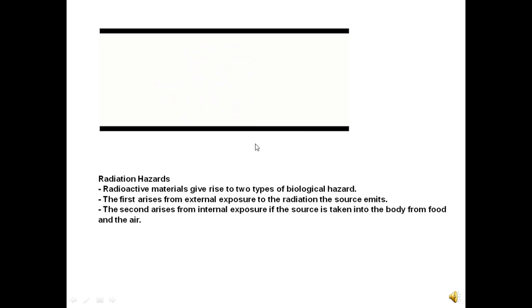Inside the body alpha is tremendously dangerous, beta less so, gamma less so than beta. We have to remember we are comparing sources of equal activity here. Clearly a more active gamma source is more dangerous than a less active beta source because of the level of activity that the radiation is producing.